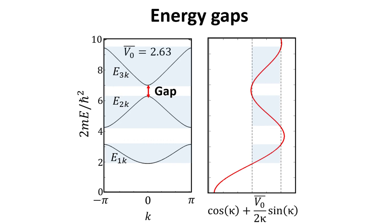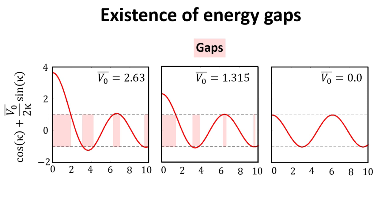Here, the energy gaps are highlighted by light red-shaded regions. The plots show that as the potential strength V0 decreases, the gaps shrink until they completely disappear at vanishing potential strength. The gaps originate from the interference of scattered traveling electron waves at specific momenta.